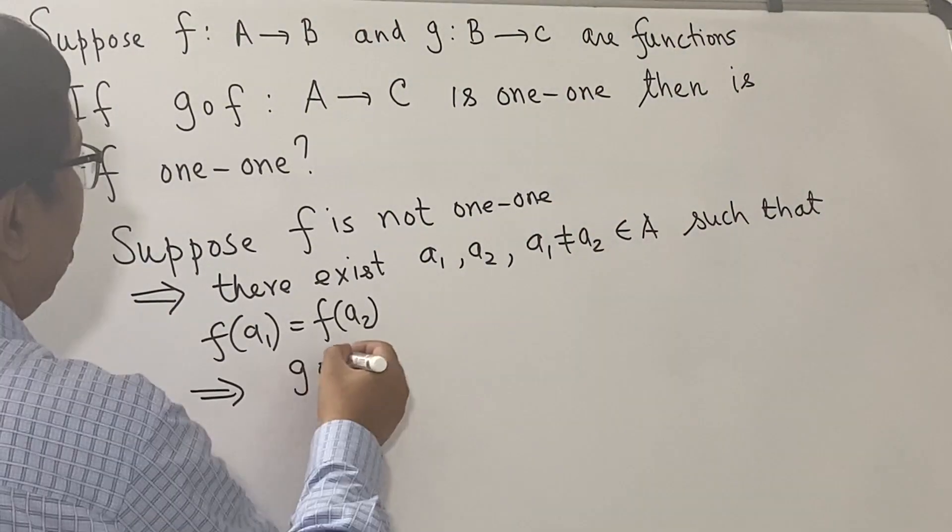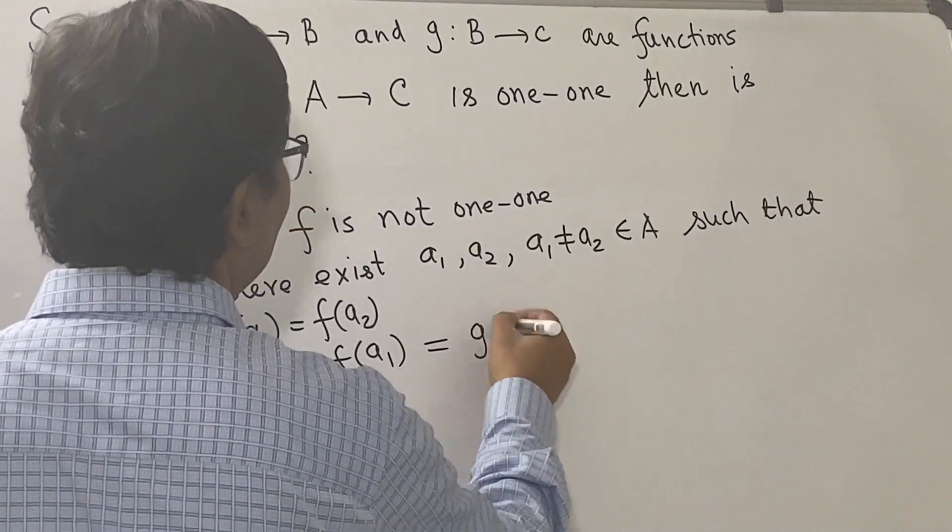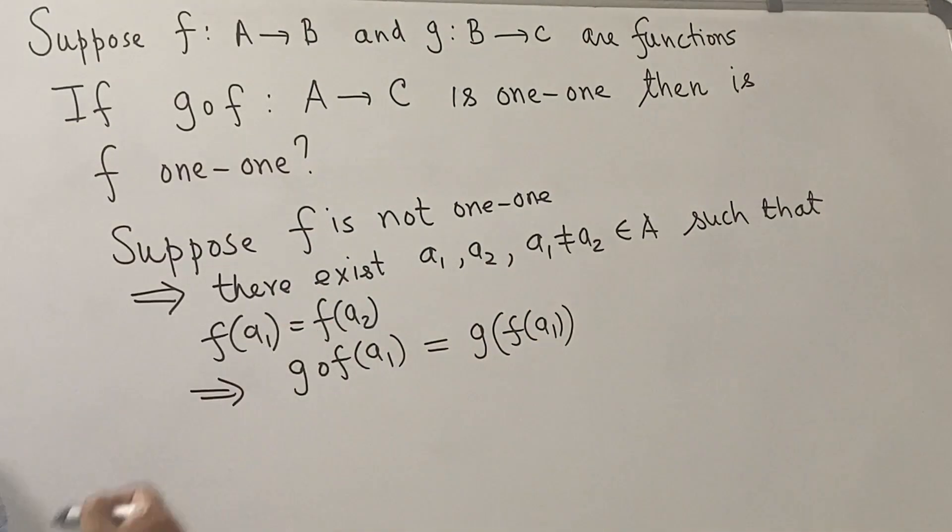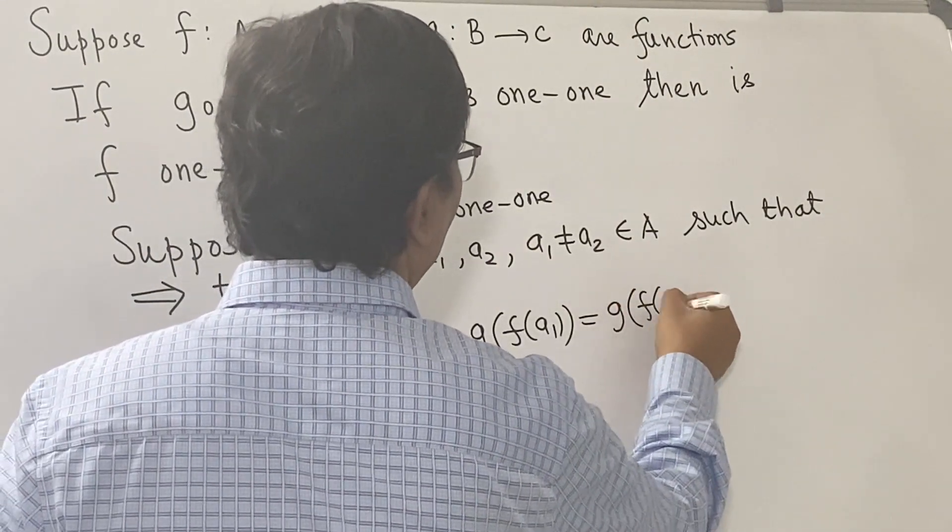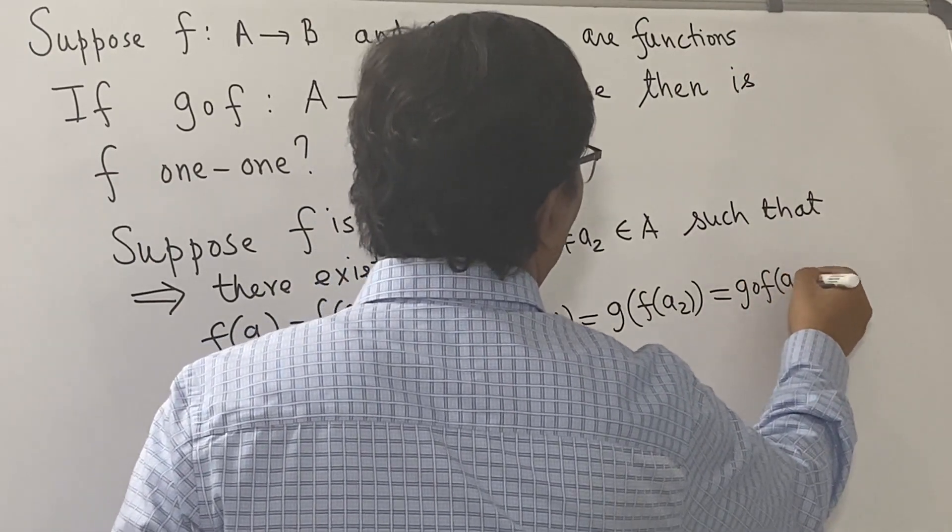Let us look at g composed with f at a₁. Another way of writing this is g(f(a₁)). Now, we have seen here that f(a₁) = f(a₂), so this is g(f(a₂)).